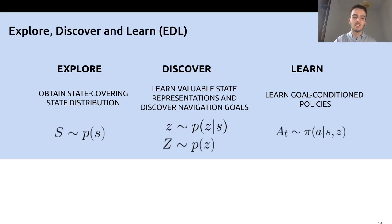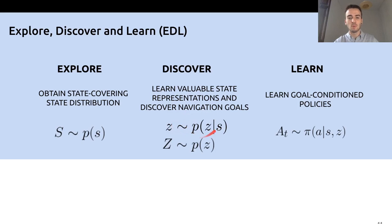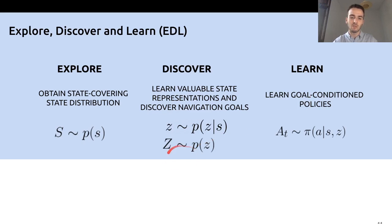For achieving this, EDL splits the end-to-end process into three tasks: exploration, discovery, and learning. In exploration, we want to visit and explore as many representative states as possible from the environment, taking into account all available information and variability. In the discovery phase, we want to learn valuable and meaningful state representations and also discover a set of goals that we interpret as navigation goals in that representation space. Finally, in the learning phase, we try to learn goal-conditioned policies to make the agents learn to reach the navigation goals defined by those representations.